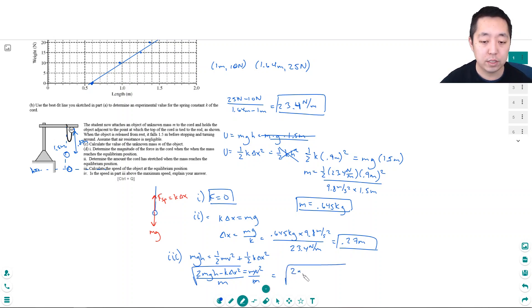But now I've got to plug in everything. So the mass, 0.645 kilograms, times 9.8 meters per second squared. That's G. Times H. In this case, the potential energy we're talking about is this 0.87 meters. Because that's where all the potential energy went. We're subtracting out K delta X squared. K is 23.4 newtons per meter. Times delta X squared. 0.27 meters squared. Divided by the mass, which is 0.645 kilograms. And what I get for this is 2 times 0.645 times 9.8 times 0.87 minus 23.4 times 0.27 squared. I got 3.8 meters per second.